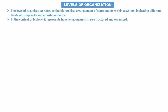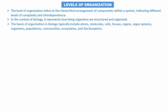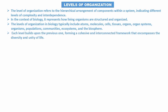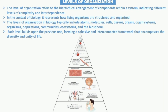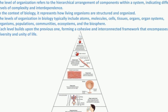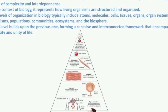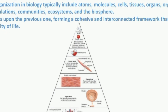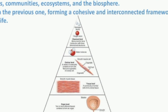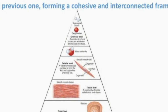The levels of organization in biology typically include: atom, molecule, cell, tissue, organ, organ system, organism, population, community, ecosystem, and biosphere. Each level builds upon the previous one, forming a cohesive and interconnected network that composes the diversity and unity of life.